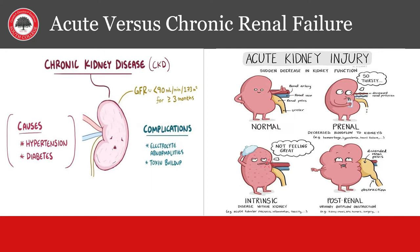Kidney failure has two main types: acute and chronic. Chronic renal failure is kidney disease over a long period of time, usually involving diseases such as diabetic nephropathy or autoimmune disease like lupus nephritis. Acute renal failure, also called acute kidney injury, is new onset renal failure and has three types: pre-renal such as dehydration or blood loss; intrinsic, which involves direct attack on the kidney like acute tubular necrosis or ATN; and post-renal, which is obstruction of urine outflow such as kidney stones or an enlarged prostate in men.